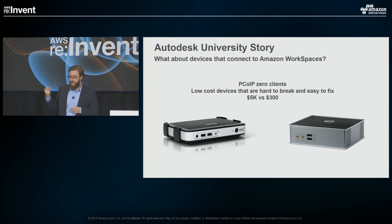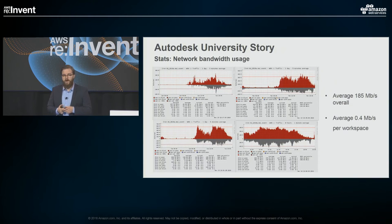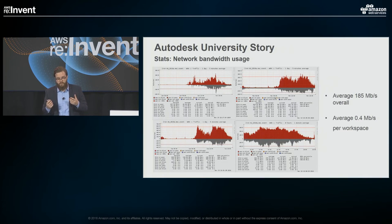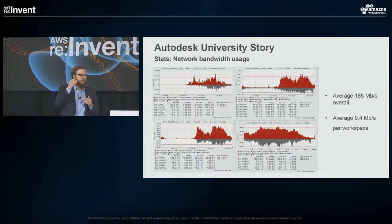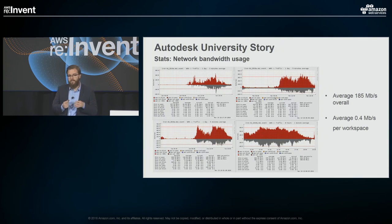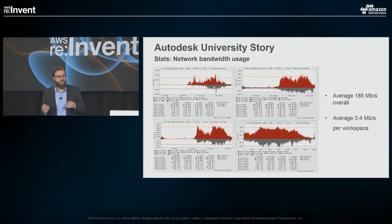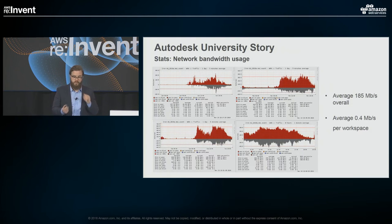A big question you might be asking is about internet bandwidth — how much do you actually need to deliver this amount of workspaces? In our case, we had two ISPs, two drops of one gigabit each. These graphs are from two weeks ago at AU — we never actually went over that one gigabit. The average overall was 185 megabytes per second, and per workspace it was 0.4 megabytes per second on average. The network requirements with workspaces are really low.